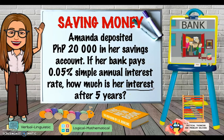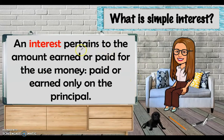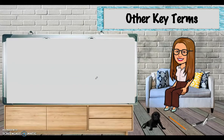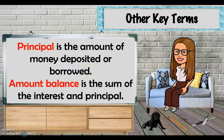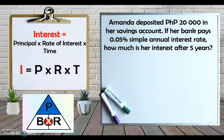Before answering, let us first define the key terms. Simple interest is the amount earned or paid for the use of money, earned or paid only on the principal. The principal is the amount of money deposited or borrowed. The amount balance is the sum of the interest and principal. Interest is a percentage, and using the percentage triangle, the formula is: base times rate, where the base is the principal times the rate of interest times the time in years.